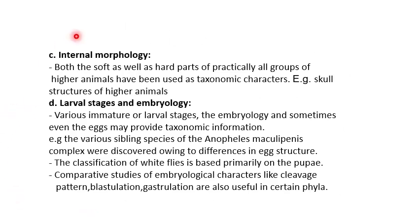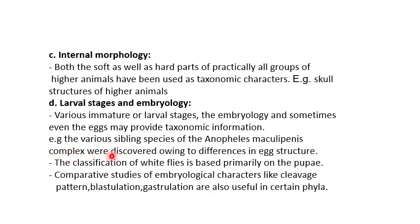Then there is internal morphology. Both the soft as well as hard parts of practically all groups of higher animals have been used as taxonomic characters — for example, skull structure of higher animals. Then there are larval stages and embryology. Various immature or larval stages, embryology, and sometimes even the eggs may provide taxonomic information. For example, the various sibling species of the Anopheles maculipennis complex were discovered owing to differences in egg structure.